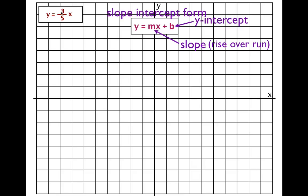I always tell my students: write down the y-intercept and write down the slope so you can recognize exactly what they are. For this equation, y equals three-fifths x, there's no number after the x. The number in front of the x is the slope; the number after the x is the y-intercept. Since there is no number after x, the y-intercept is zero — it's not that there is no y-intercept, it's that the y-intercept equals zero. So: b equals zero, slope equals three-fifths.